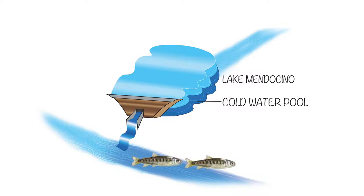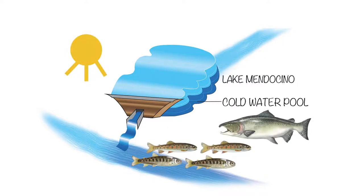Juvenile coho salmon and steelhead living downstream from the reservoirs benefit from the cool water releases during the warm summer and fall. Adult Chinook salmon returning to the river to spawn in the fall also benefit from the cool water releases.